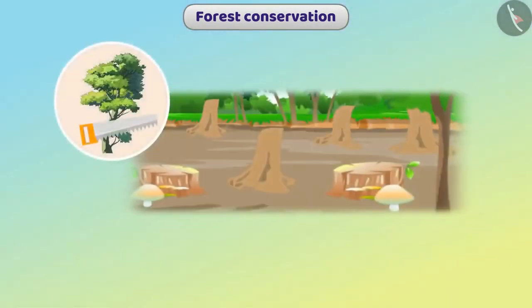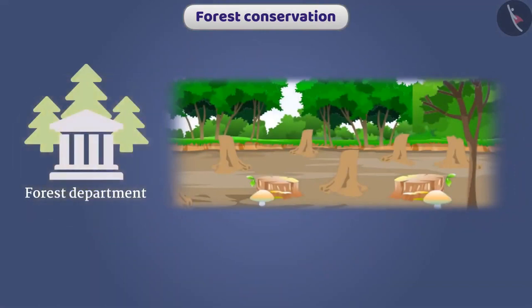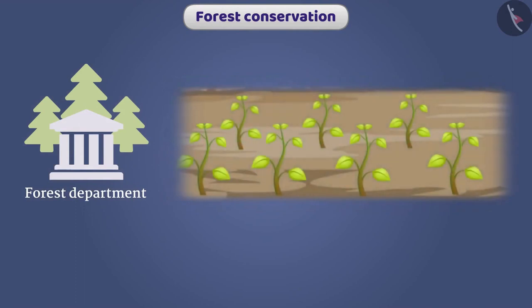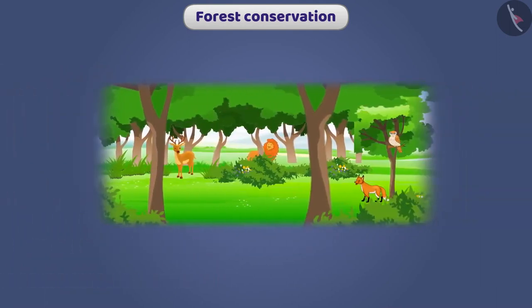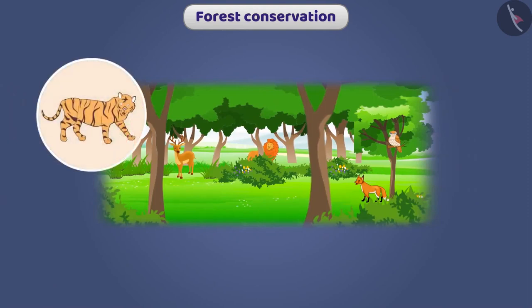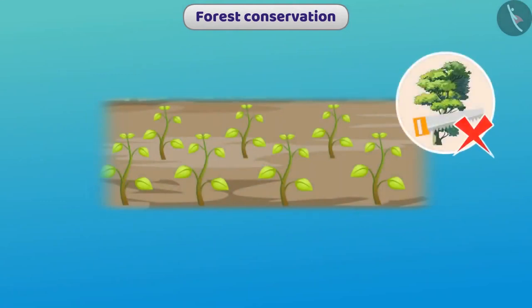The British over-exploited the forests. When control of forests went to the forest department of the government, the same type of trees were planted on destroyed forest areas, giving industrialists a source of raw materials and revenue to the forest department. But biodiversity was destroyed on a large scale, and various species became extinct or are on the verge of extinction. We should fulfill industrial needs by planting trees on barren lands, not by cutting forests.